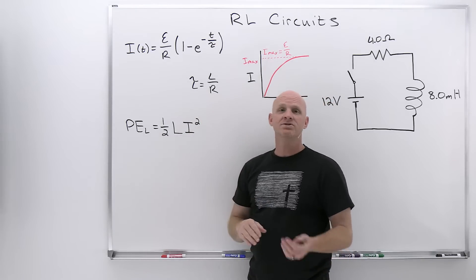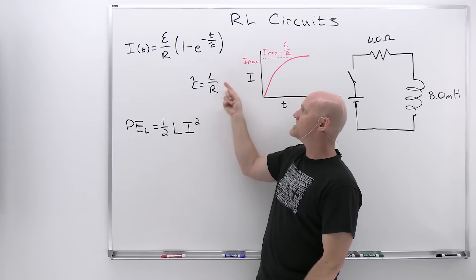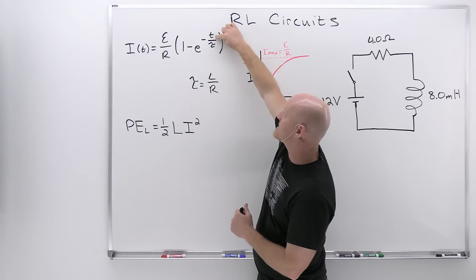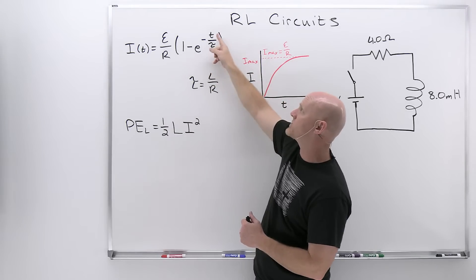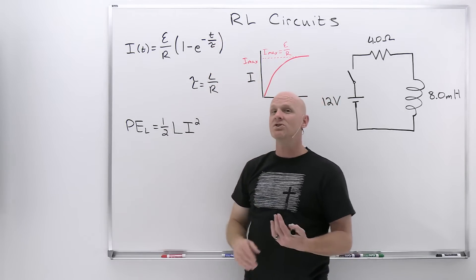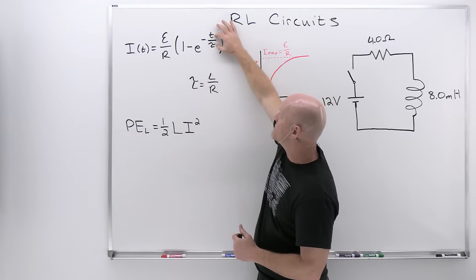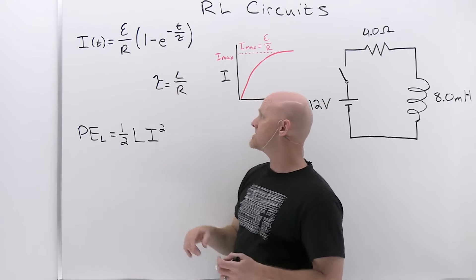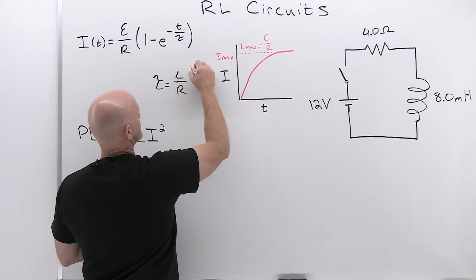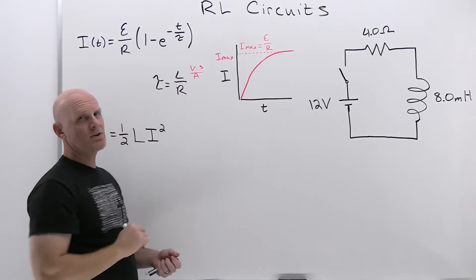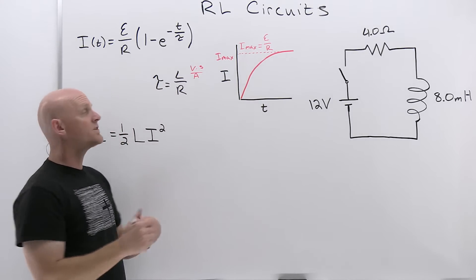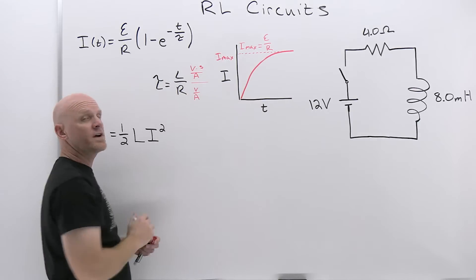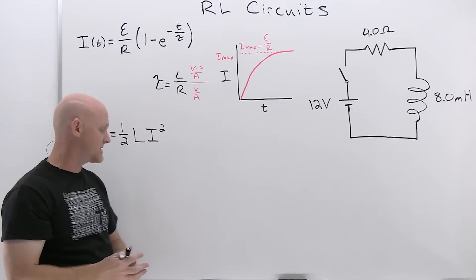The time constant in an RC circuit was R times C, but in an RL circuit it's the inductance L divided by the resistance R, and it has units of seconds in SI units. This makes sense because t divided by tau in the exponential must be unitless — both must share units of seconds. We can verify: inductance in henries is volt·seconds per ampere, and resistance in ohms is volts per ampere. Dividing henries by ohms cancels volts and amperes, leaving only seconds. So τ = L/R indeed has units of seconds.